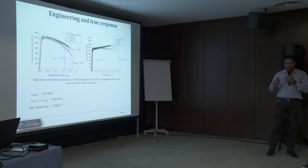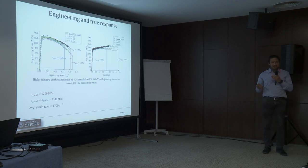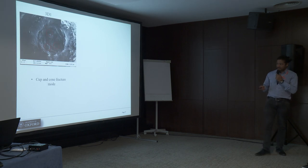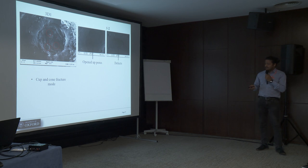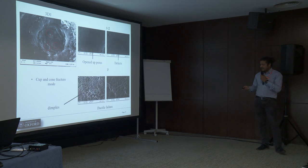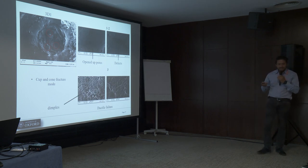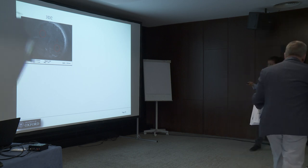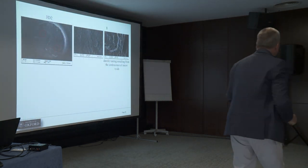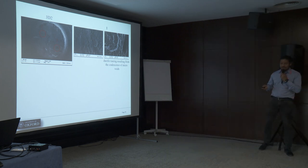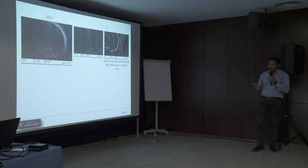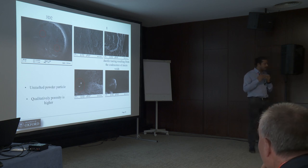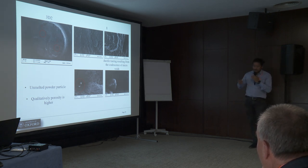We are currently performing SEM analysis on the fracture surfaces to compare the features observable between two different build directions. Direction 1 shows a cup-and-cone mode fracture with open pores, defects, and accumulation of dimples, indicating a ductile fracture surface. Whereas the fracture surface of the vertically built direction was clean. Looking more closely, there are some signs of ductile tearing resulting from coalescence of micro-voids, evidence of unmelted particles, and qualitatively, higher porosity compared to the other direction.